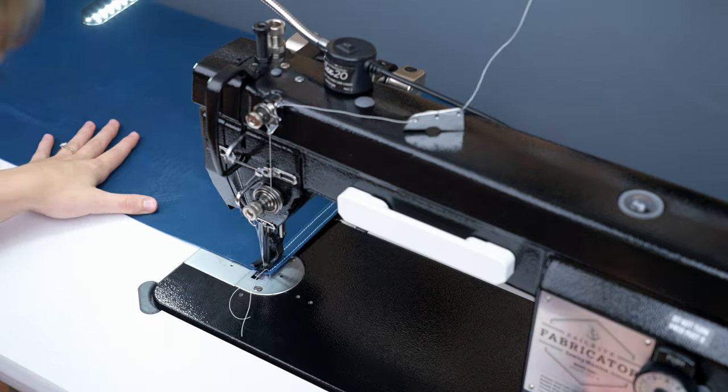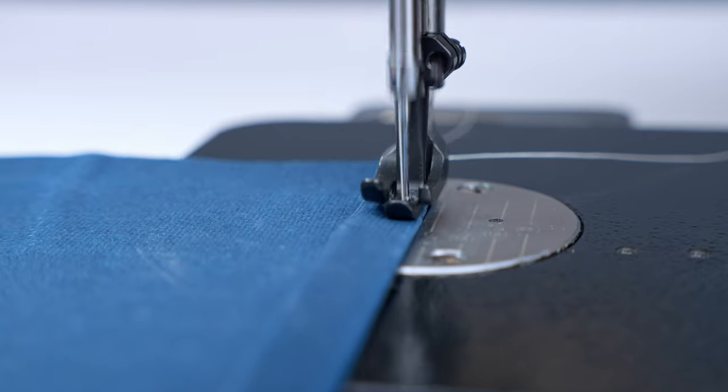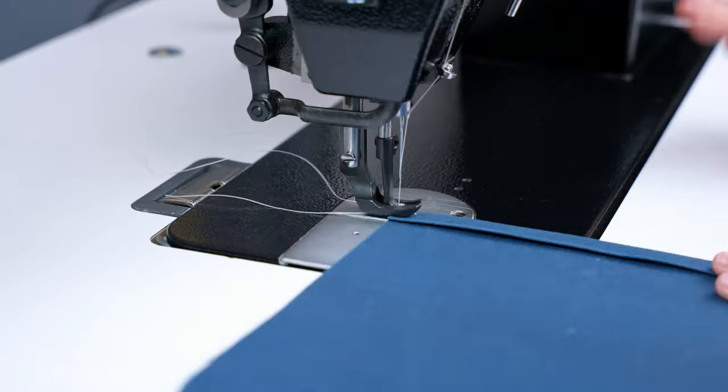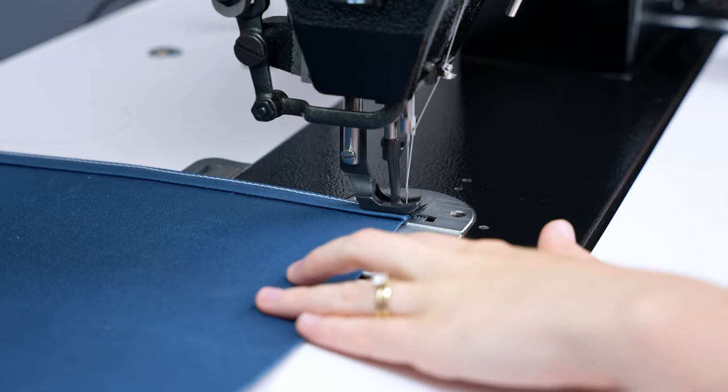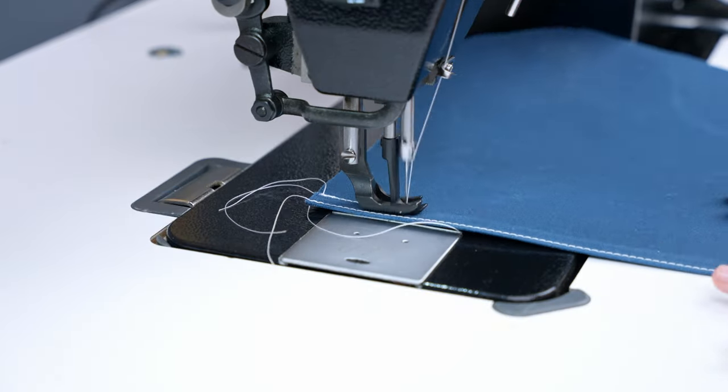If you're sewing on the Fabricator, we recommend lining up your material along the edge of the inside presser foot to achieve a straight eighth inch stitch distance. Once those pieces are hemmed, we will move on to sewing our handles.